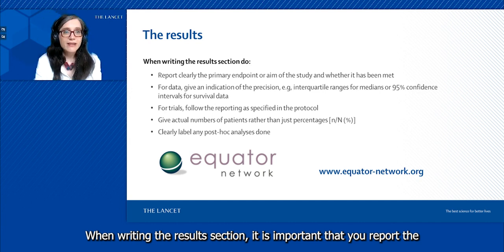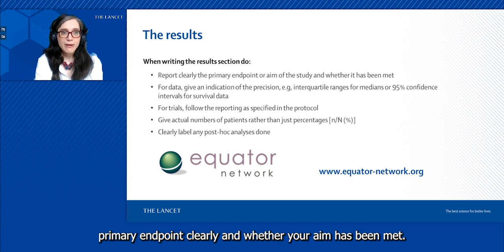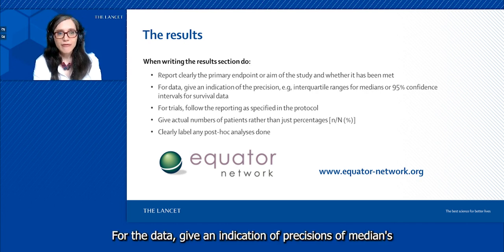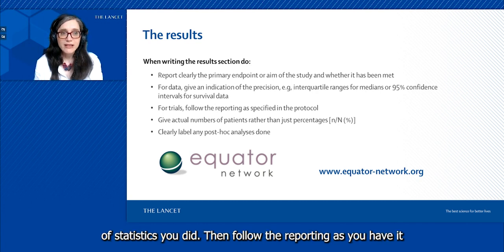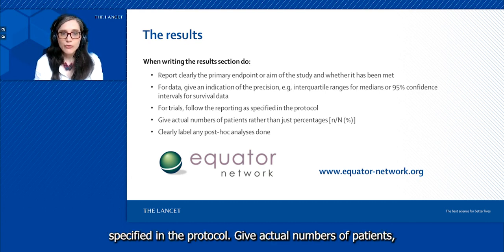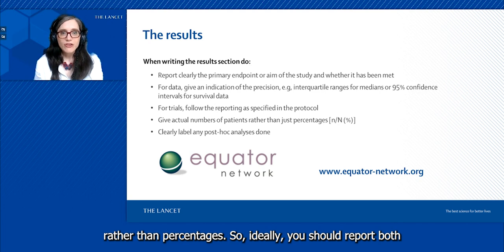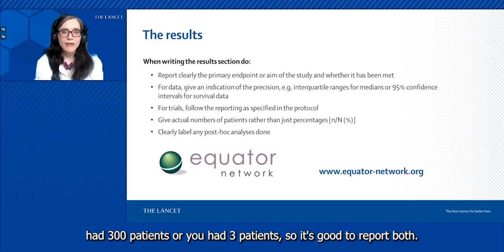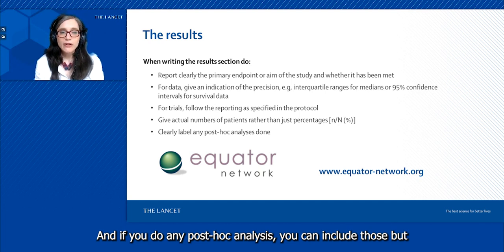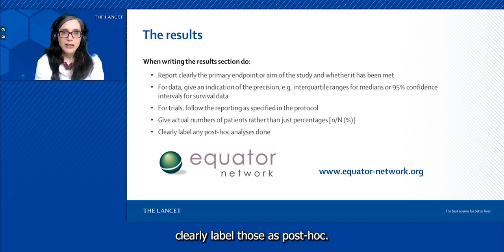When writing the results section, it's important that you report the primary endpoint clearly and whether your aim has been met. For the data, give an indication of precision—medians, confidence intervals and so on, depending on what kind of statistics you did. Then follow the reporting as you had it specified in the protocol. Give actual numbers of patients rather than percentages. Ideally you should report both, because percentages can mean something very different. It's good to report both.